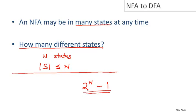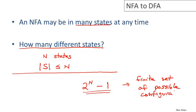And there's something very interesting about this number. First of all, it's a very big number, so clearly the NFA can get into lots of different configurations, particularly one with a lot of different states. But the important thing is that this is a finite set of possible configurations. And this is going to give us the seed of the idea for converting an NFA into a DFA, because all we have to do is come up with a way for the deterministic automaton to simulate the behavior of the non-deterministic automaton. The fact that the NFA can only get into a finite set of configurations is exactly what we will exploit in the construction.